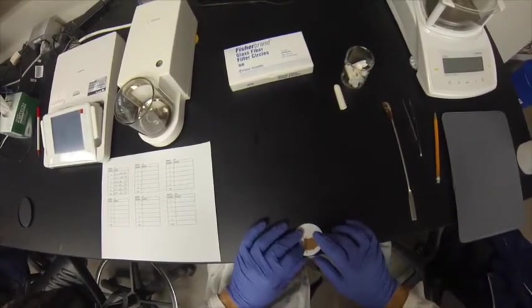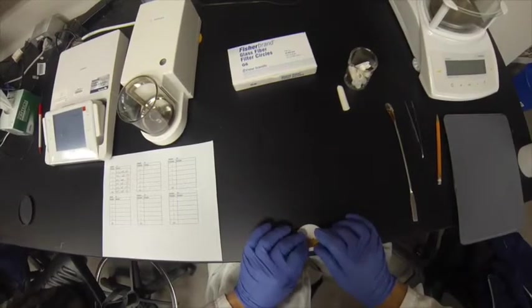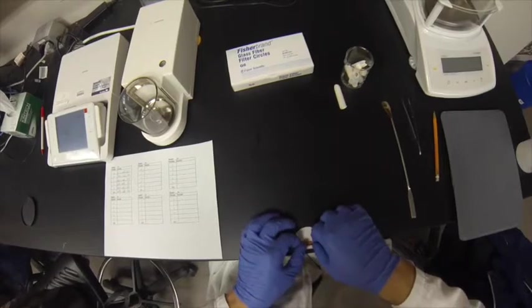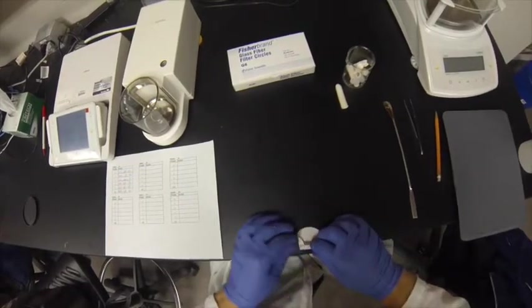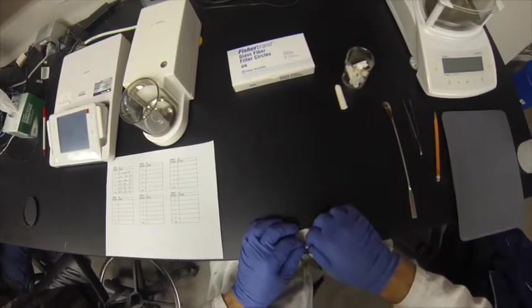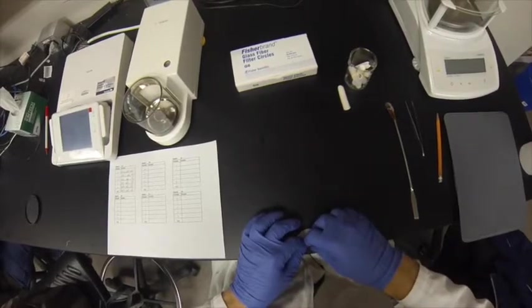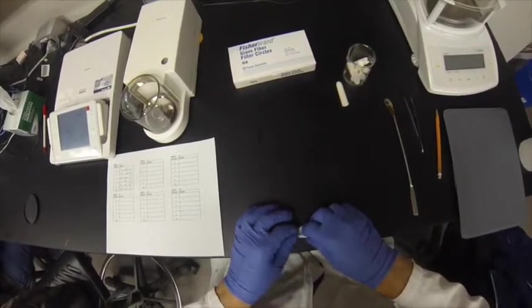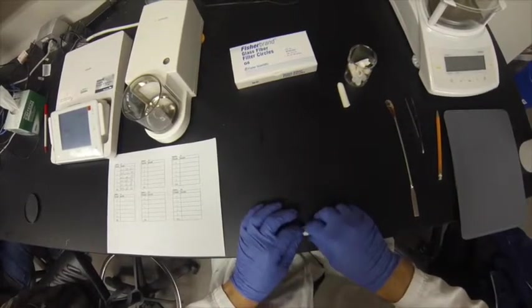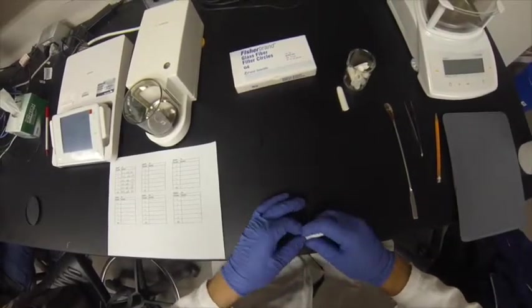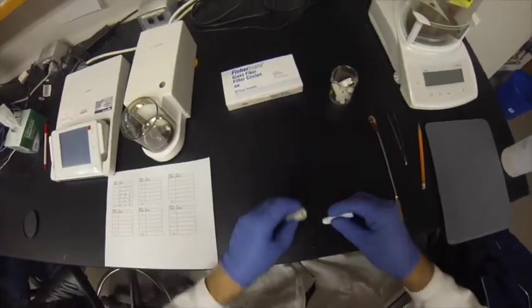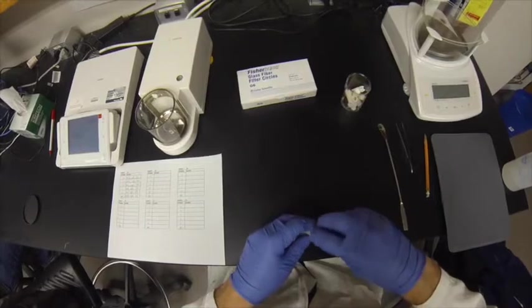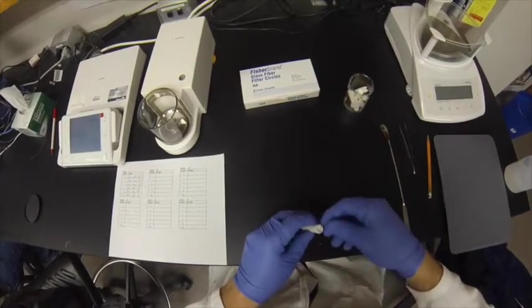Dump the sample out of the mortar into the filter paper. Then, carefully wrap the sample in the filter paper by folding over each end and rolling it up like a burrito. Before inserting the sample, check the thimble for large pieces of paper or sample that may be stuck to the bottom, remove any such pieces and throw them in the garbage, then slide the rolled paper into the thimble.